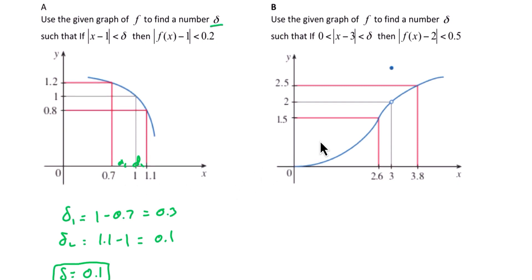In example B, again, we're given the graph of f and we are looking for the delta value for this particular graph. Delta 1 is the region between 2.6 and 3. Delta 2 is the region between 3 and 3.8. So delta 1 we can think of as 3 minus 2.6 or 0.4.